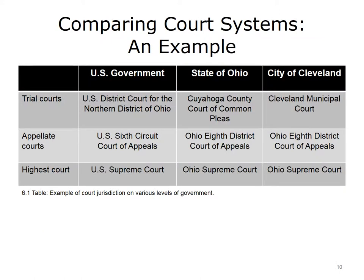The table on this slide shows an example of court jurisdiction for various levels of government. For someone who lives in Cleveland, Ohio, there are three separate trial court systems. If a dispute falls under federal jurisdiction, it would be heard in the U.S. District Court for the Northern District of Ohio. If it involves a question of state law, it would be heard in the Cuyahoga County Court of Common Pleas. If the issue involves a violation of the city code, it would be heard in the Cleveland Municipal Court. The appellate court and the high court would depend on which trial court heard the case.